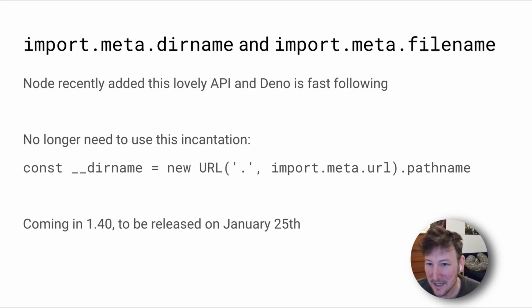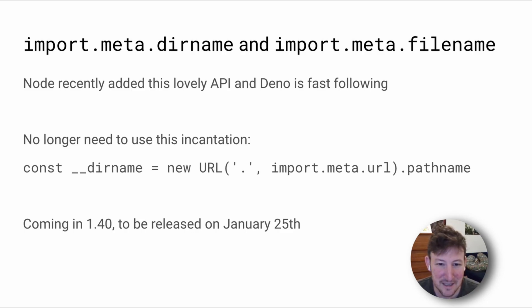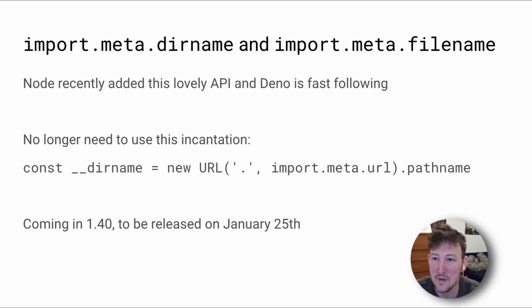And gosh, I really miss the use of the double underscores in Node.js. This seems to be a really good solution to how to make these functionalities. That's all for this week's update. Happy Dino hacking. See you next time.